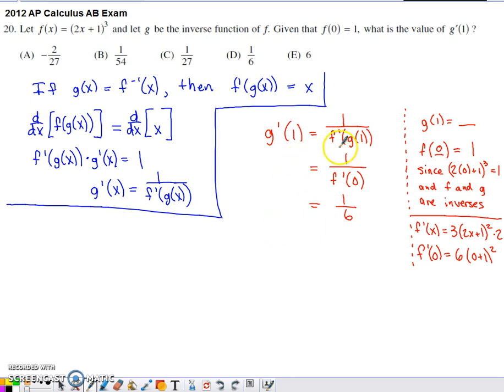So when I try to apply that formula, I end up with 1 over f prime of g of 1, since that's the x value I would like to know the inverse's derivative at. So now the question becomes, what is g of 1?